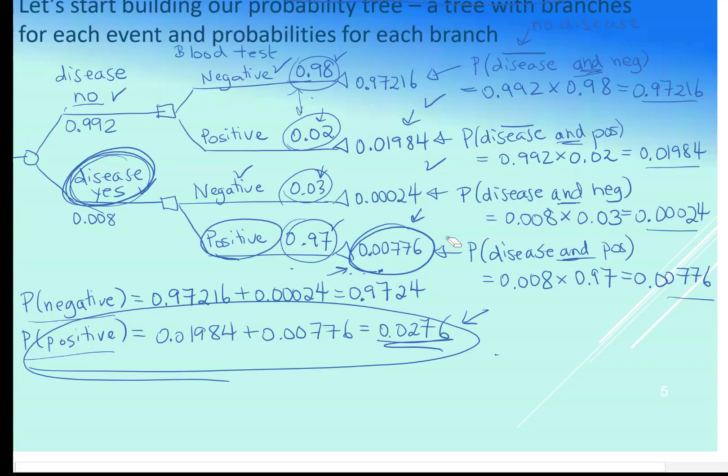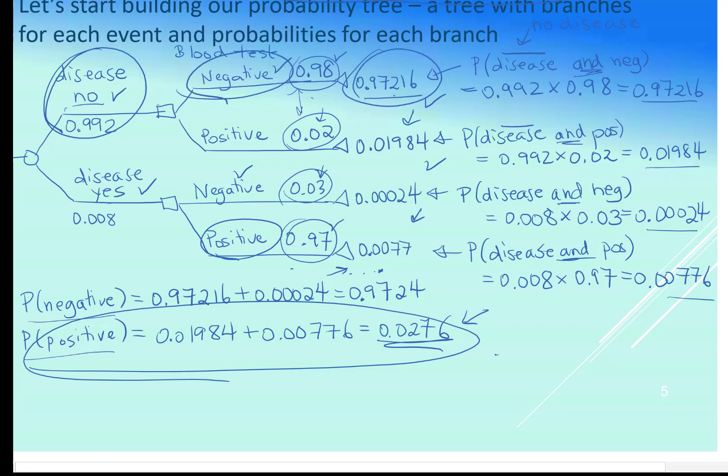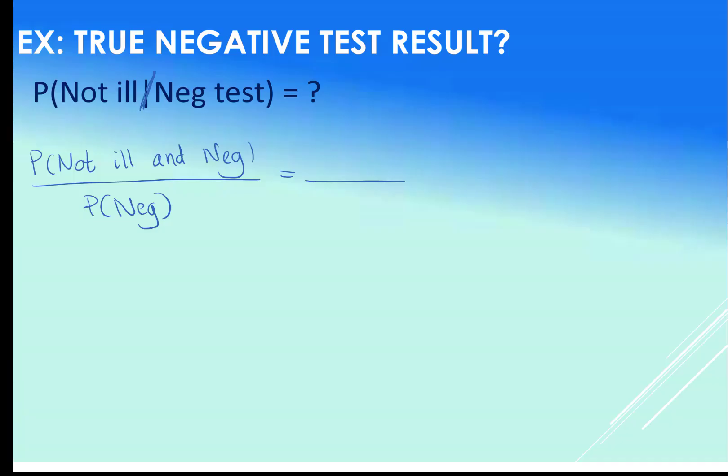Okay, so the not ill and negative, let's just go back here. So not ill and negative, not ill, disease no, and negative. Well, that's this 0.97216. And the odds of negative, we also calculated, that's that 0.9724. So we just put both of those into our formula. So we have the 0.97216 and the 0.9724.